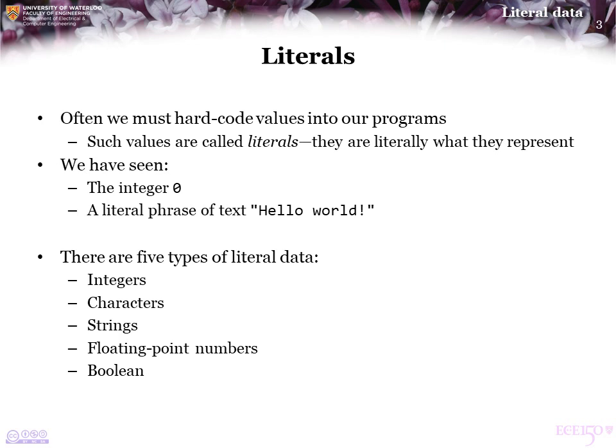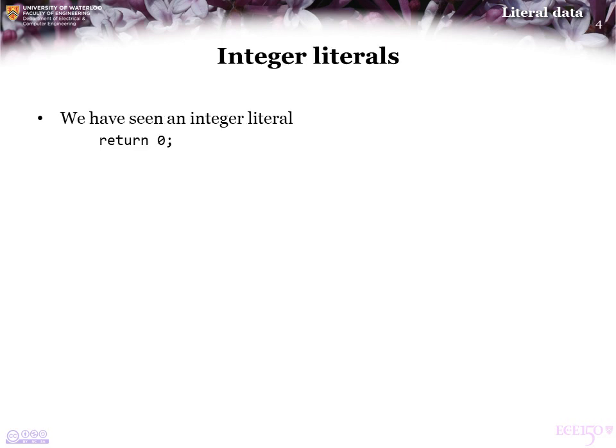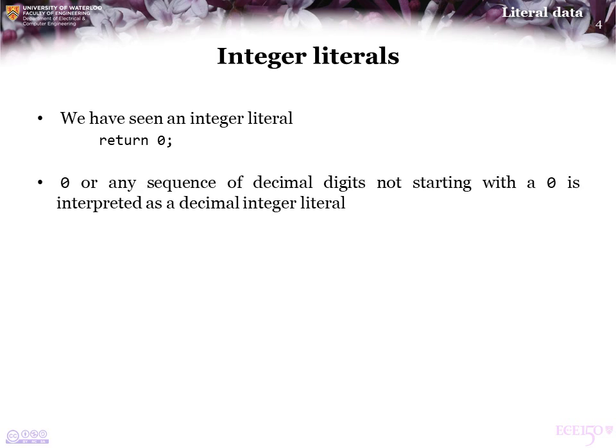There are five types of literal data: integer, character, string, floating point number, and Boolean. We have already seen a literal integer in the statement return 0. Zero, or any sequence of decimal digits not starting with a 0, is always interpreted as a decimal integer literal.